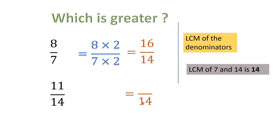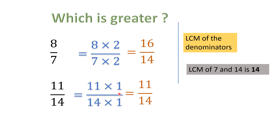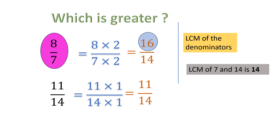For 11/14, the denominator is already 14, so we multiply by 1. 14 multiplied by 1 is 14, and 11 multiplied by 1 is 11. So the equivalent fractions are 16/14 and 11/14. Now they are like fractions with the same denominator, and we can compare numerators. 16 is greater, so the fraction corresponding to 16/14 — that is, 8/7 — is the greater fraction.